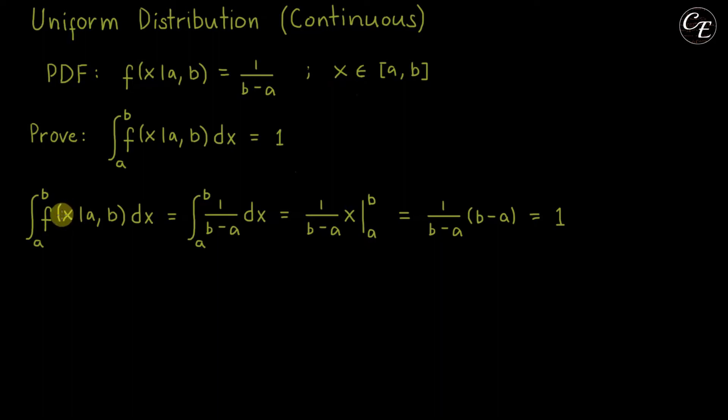Then this function of x given the parameters a and b is a general notation for a probability density function, so let us replace this one by this one. So we have this from here.